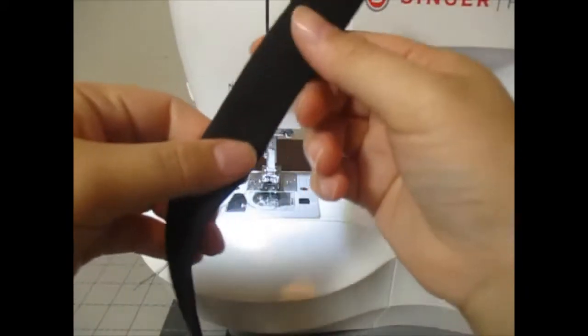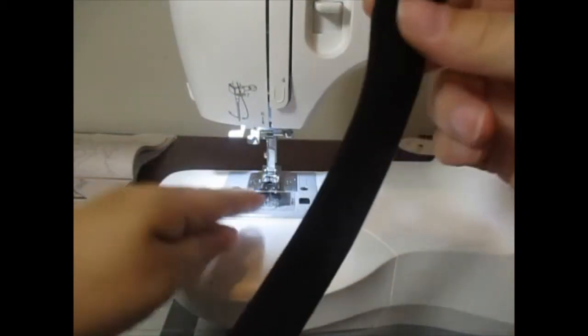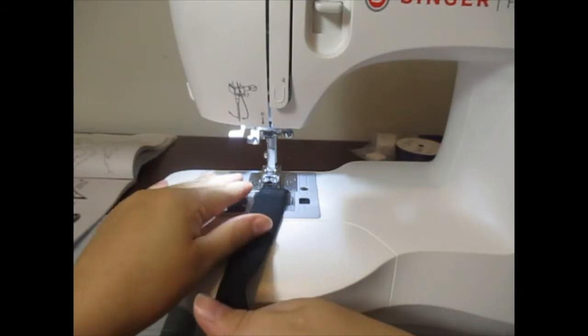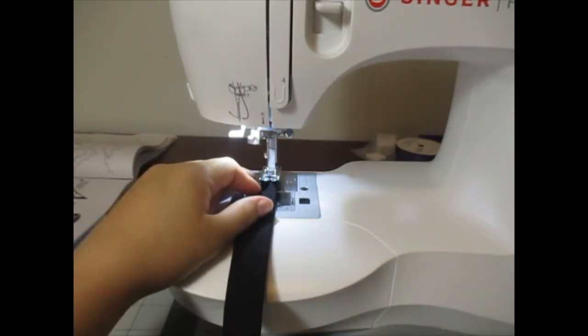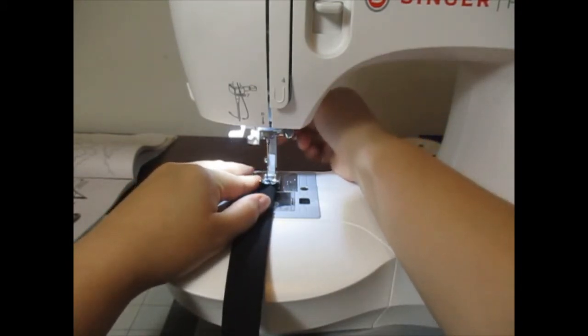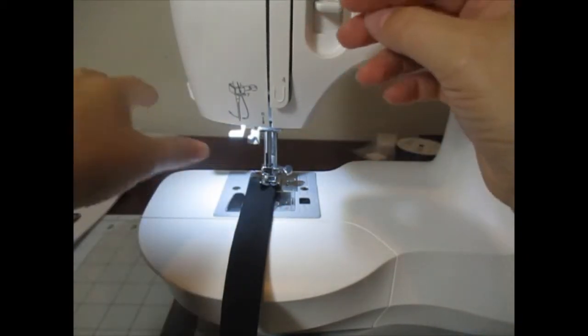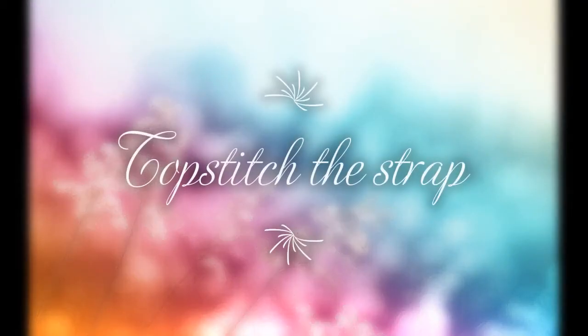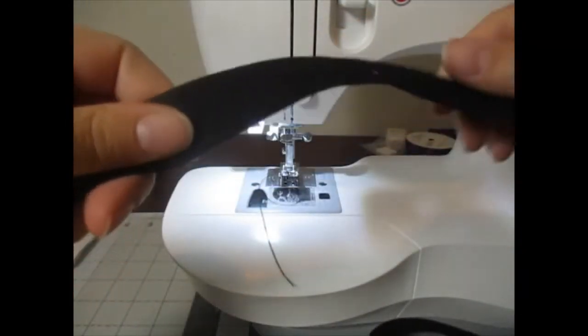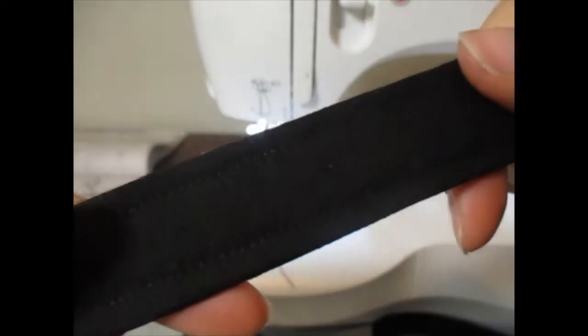What we're going to do is we're just going to top stitch all the way around the entire strap. This is optional—you don't have to do this. But I like to do it because it makes the bag, first of all, look a little more professional. And it also is more sturdy. It doesn't feel like it's going to come apart. So you don't have to do this, but I like to do this with my straps.